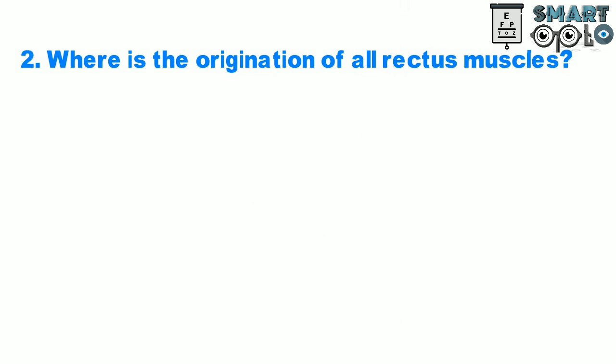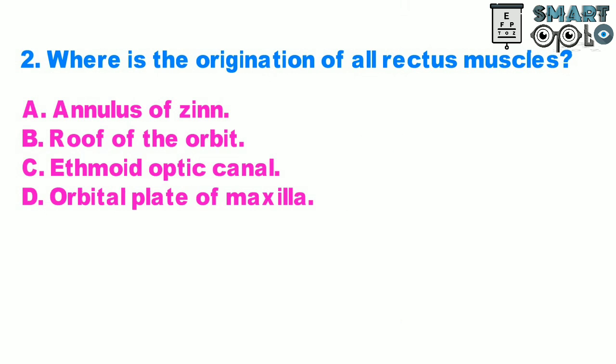Question 2. Where is the origination of all rectus muscles? A. Annulus of Zinn, B. Roof of Orbit, C. Ethmoid Optical Canal, D. Orbital Plate of Maxilla.